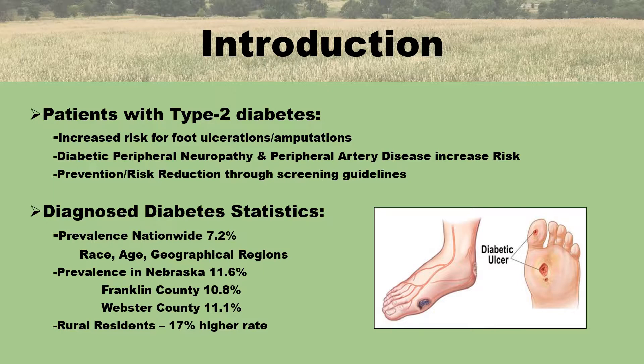Geographical patterns indicate the highest incidence of diabetes in the southern and Appalachian regions, followed by the mid and southwestern states. According to the CDC, the incidence of diagnosed diabetes in Nebraska is 11.6%, well above the national average of 7.2%. In the counties where I practice, the rates are similar: Franklin County 10.8% and Webster County 11.1%. Overall, rural residents experience a 17% higher rate of type 2 diabetes compared to their urban counterparts.